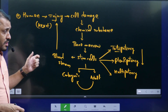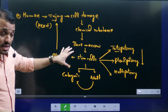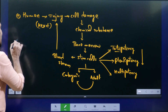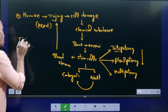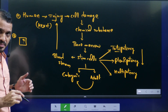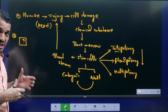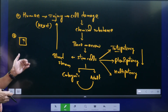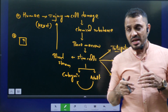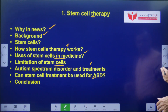Apart from bone marrow, there is another place in the human body where stem cells are found, which is becoming very popular nowadays. Students should think about where else stem cells are frequently found in the human body apart from bone marrow. This covers the conceptual understanding regarding stem cells.